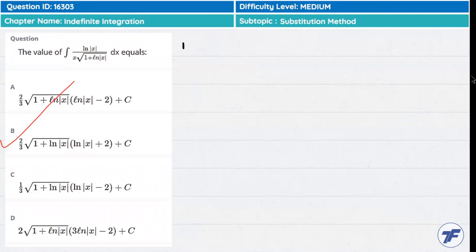What do we do? Set 1 plus ln(|x|) equal to another variable, let's say t-squared, so that the radical sign will be removed and the derivative of ln(x) will be 1 over |x|, which will be 1 over x. I can say that x will be positive.